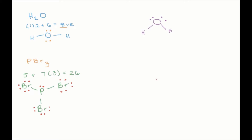Based on the model kit, phosphorus is going to be in the center, with three bromines forced downwards, because you then have your lone pair of electrons on top. Instead of drawing two dots, you can simply draw one line — that represents two electrons. I need to add six electrons to each bromine: two, four, six for each one. And that is the proper Lewis dot structure for PBr₃, taking into consideration your VSEPR model.